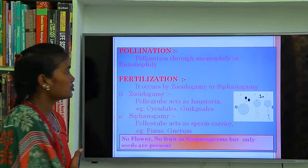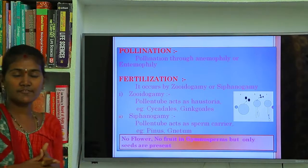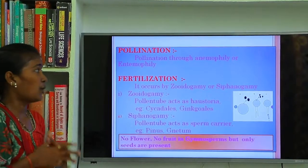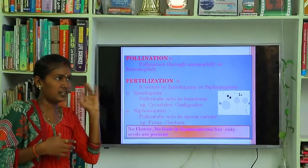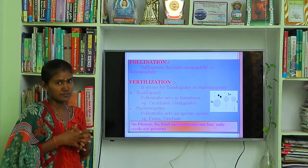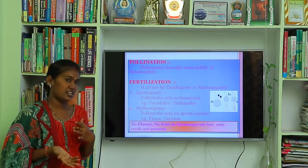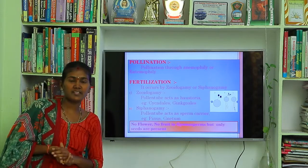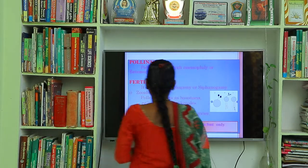Going to pollination. Pollination in gymnosperms occurs through anemophily or entomophily. Anemophily means pollination through air or wind, and entomophily means pollination through insects.